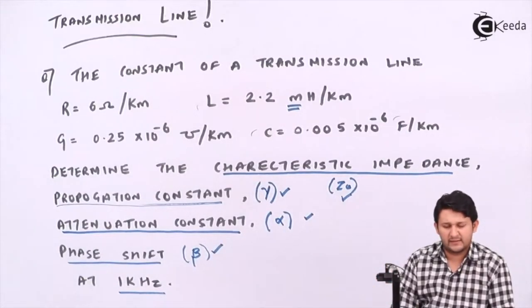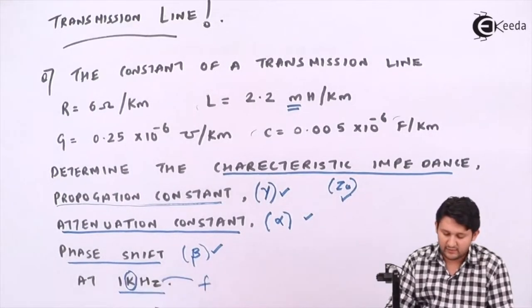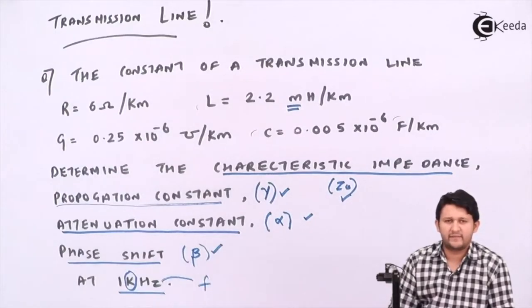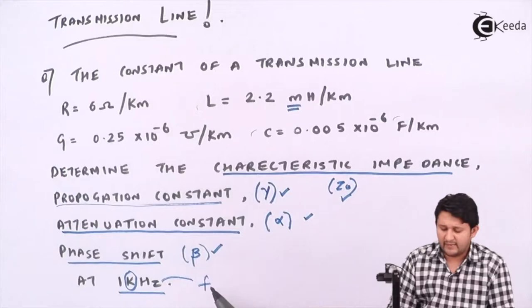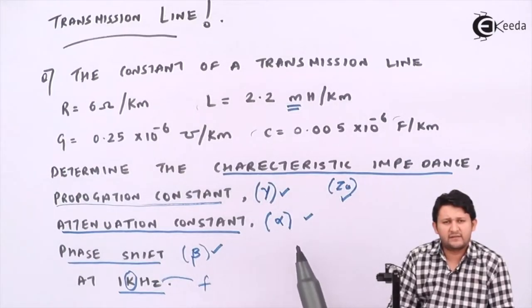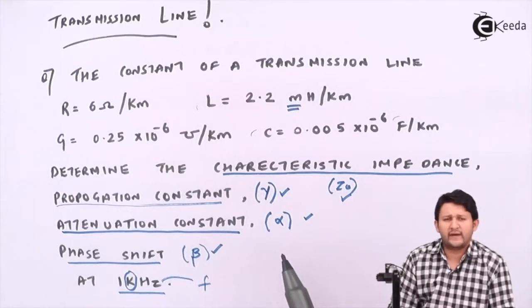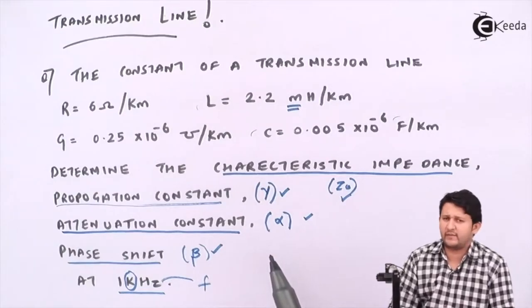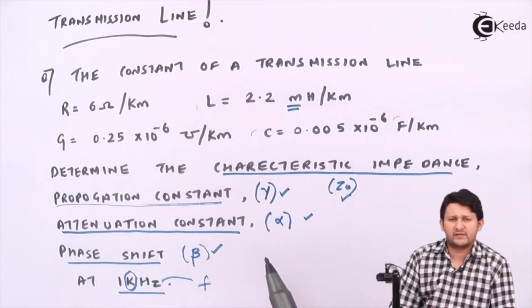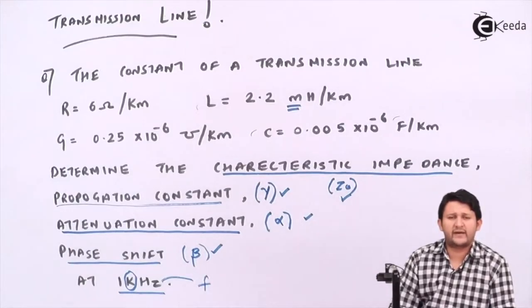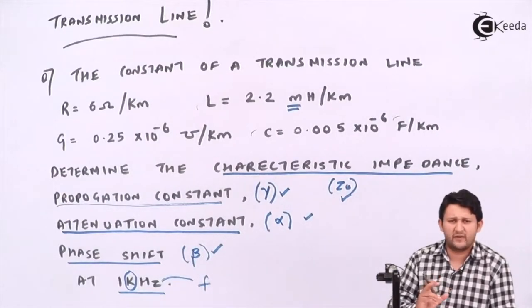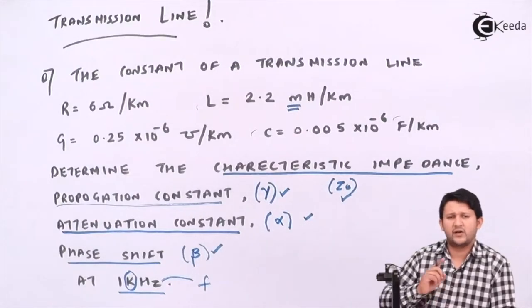The frequency is given as 1 kHz, which means f = 10³ Hz. Beyond finding Z₀, γ, α, and β, we'll also find two more variables if asked: lambda (λ), which is the wavelength, and vp, which is the phase velocity. We'll find all these parameters step by step — just remember the basic formulas and put in the values. You'll need a calculator for this.